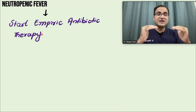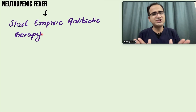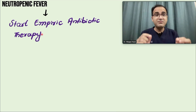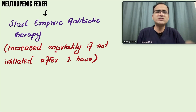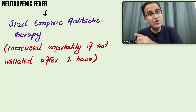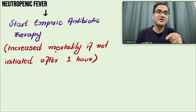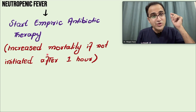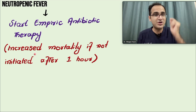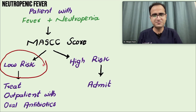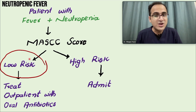After classifying the patient by MASCC score and taking baseline investigations, immediately start the patient on antibiotic therapy. It is very important to start empiric antibiotic therapy within one hour of presentation. Neutropenic fever is an exception where you start antibiotics immediately — not starting antibiotics within one hour increases mortality in these patients.